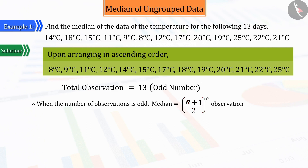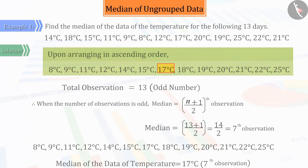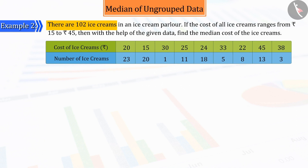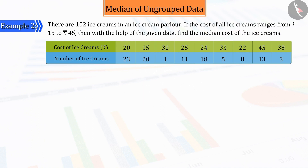Let us now discuss this in detail. There are 102 ice creams in an ice cream parlor. If the price of ice creams ranges from 15 rupees to 45 rupees, then with the help of the given data, find the median cost of the ice creams. Let us try to solve this.